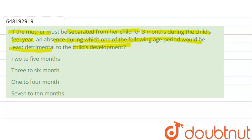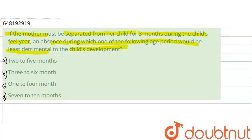So, they are saying that a mother has to be separated from her child for a duration of 3 months. And in her absence, which age period would be least detrimental to her child: 2 to 5 months, 3 to 6 months, 1 to 4 months, or 7 to 10 months?